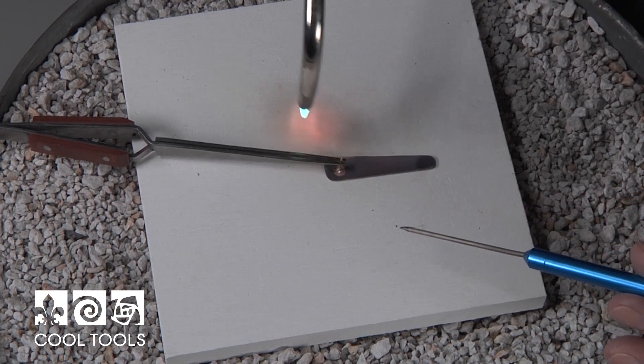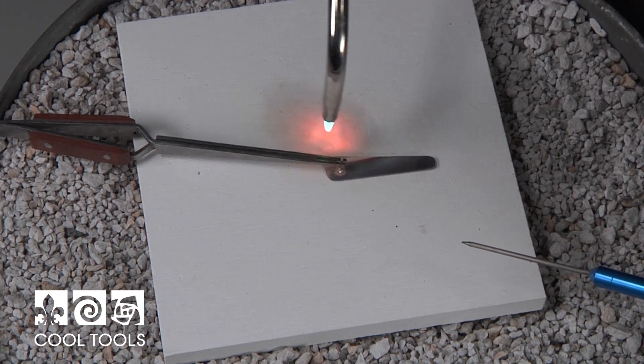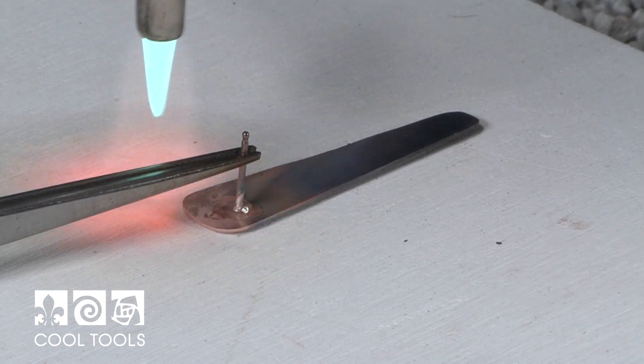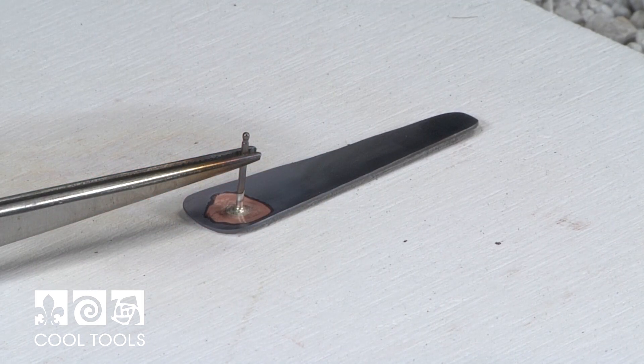And I'm heating on the opposite side of the post because when that solder flows it's going to flow to the heat. So if I'm heating the larger piece of metal the solder first will change shape, ball, and then it flows and you're done.